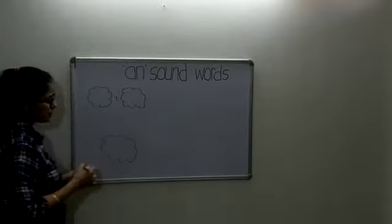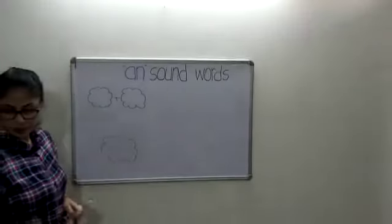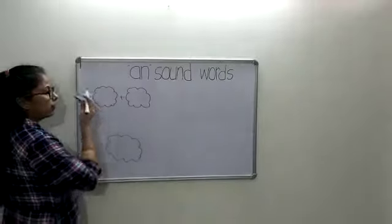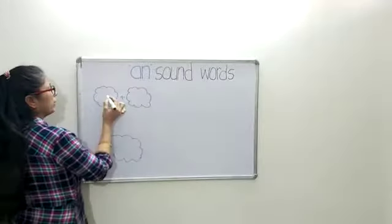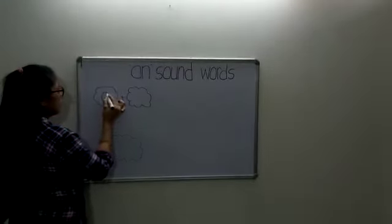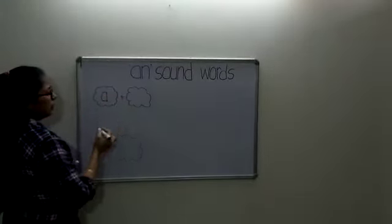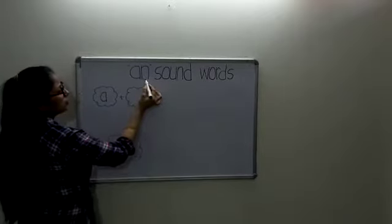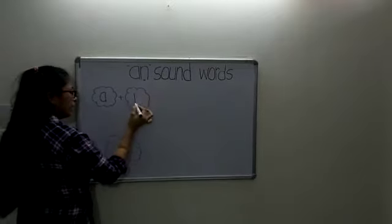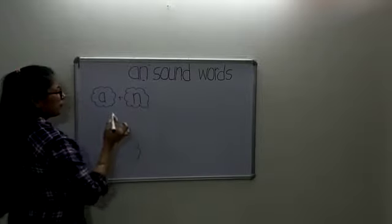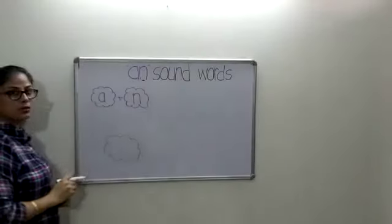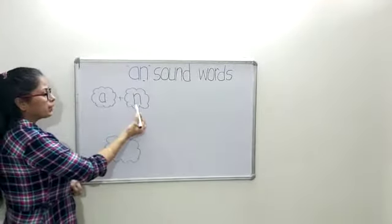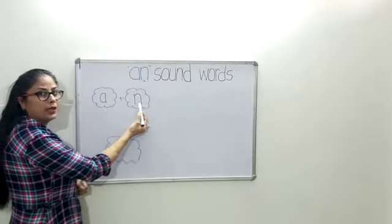In this session we add a different sound with the first vowel A. As we know, the first vowel is A and in this session we are going to learn about the phonetic sound of AN. The phonetic sound of A is A, and the phonetic sound of N is N.